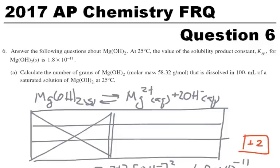We're going to look at the 2017 AP Chemistry FRQ, question number 6. And this has to do with solubility products, KSP.